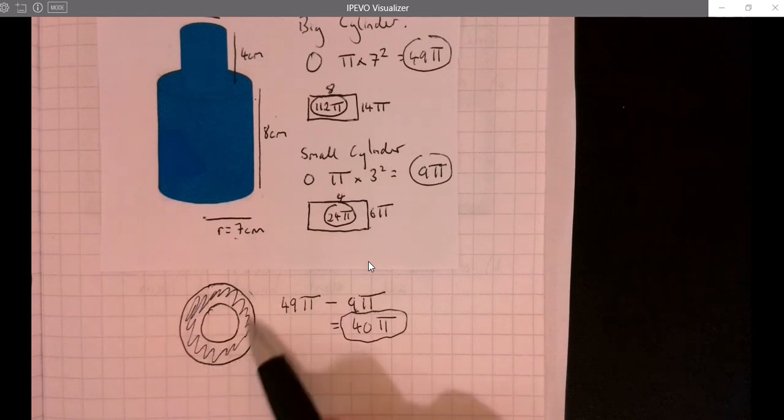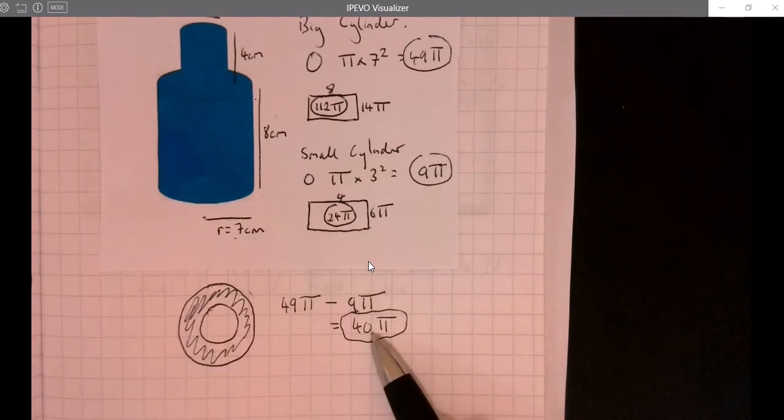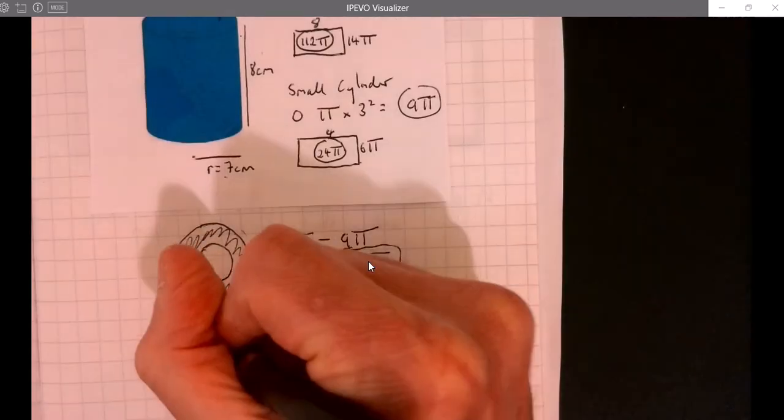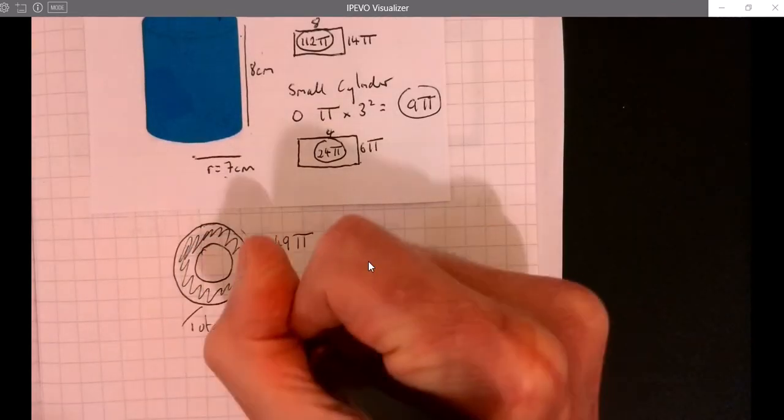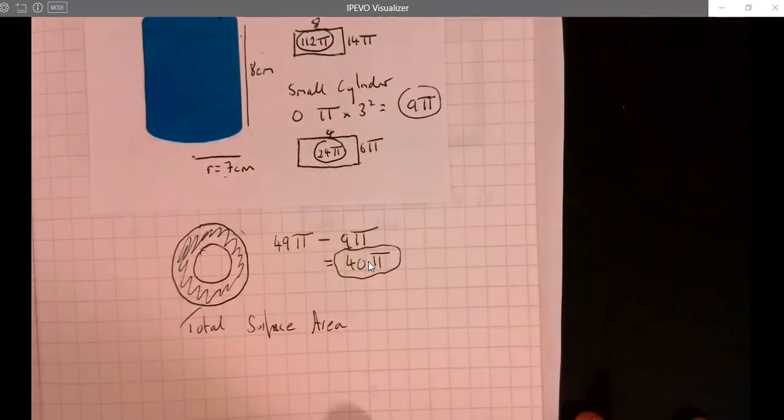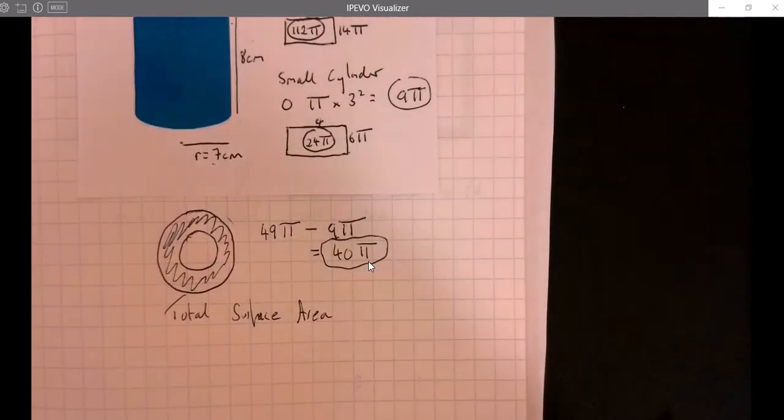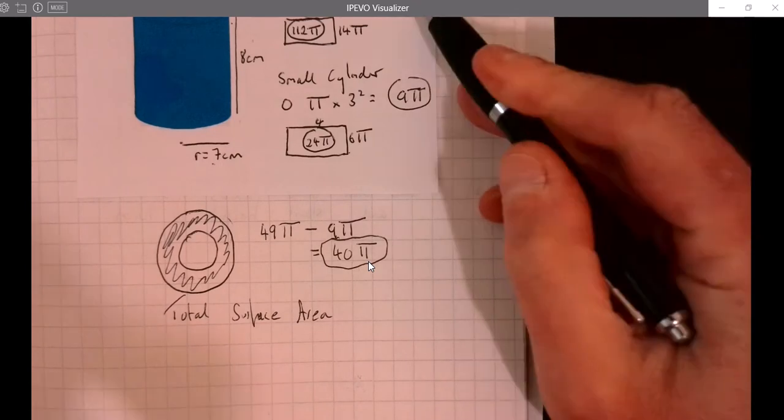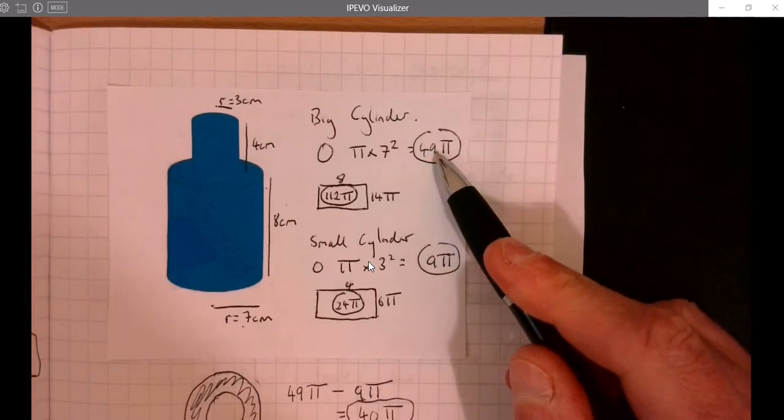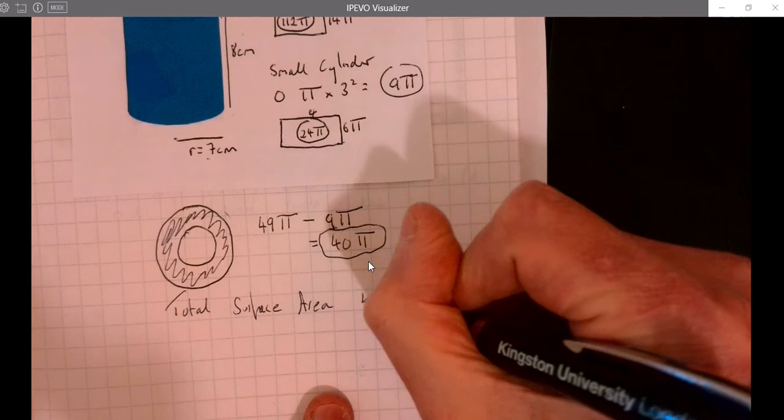So the total surface area - the more you write down in workings the easier everything is. If you try to get away with not writing much down it'll just be harder. Let's go back up, we've got the big circle underneath, 49π.